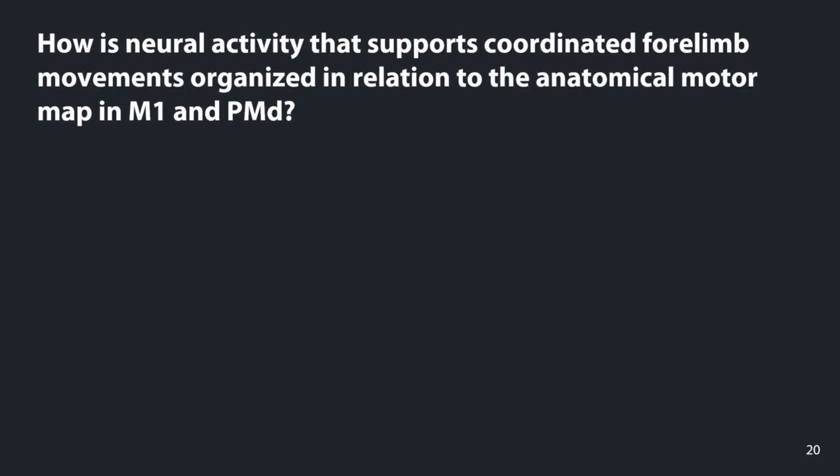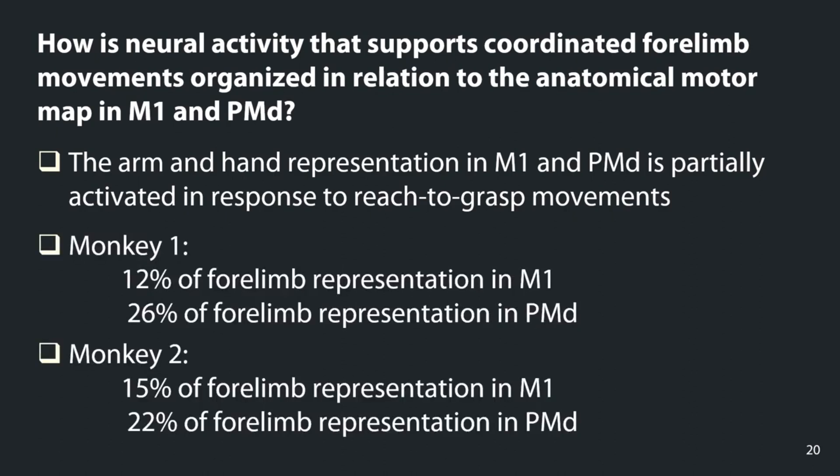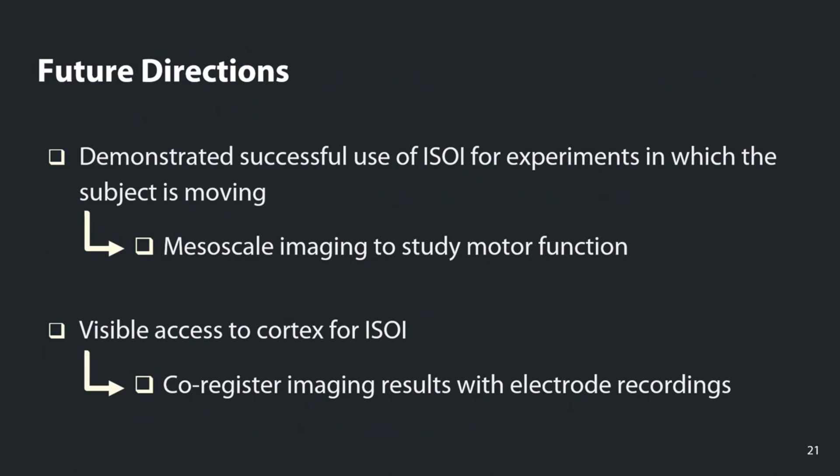To summarize: the arm and hand representation in M1 and PMD is only partially activated in response to reach-to-grasp, specifically around 14% of both the arm and hand in M1, and around 25% of the arm and hand in PMD. Looking forward, successful use of ISOI during movement will allow mesoscale imaging to study motor function, and can be implemented in other brain areas or during different behavioral tasks. The visible access of cortex also allows co-registration of imaging results with electrode recordings using the blood vessel map to cross-reference results. Thank you, and I look forward to your questions.